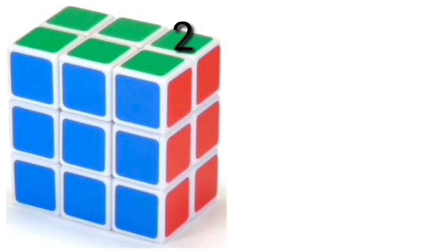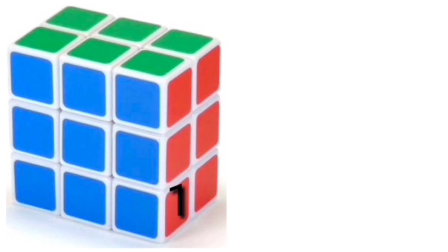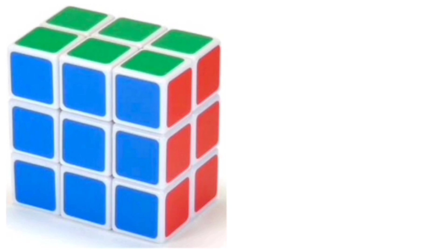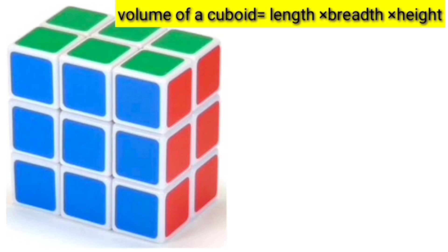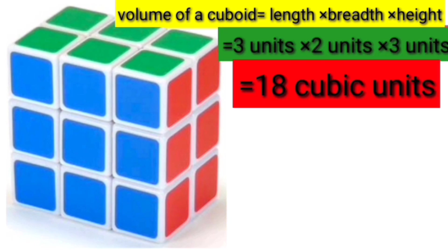1 and 2 — there are 2 cubes breadthwise. We will write it as breadth is equal to 2 units. Heightwise, there are 1, 2 and 3 cubes. We will write it as height is equal to 3 units. Volume of a cuboid is length into breadth into height. So the volume of this cuboid is 18 cubic units.